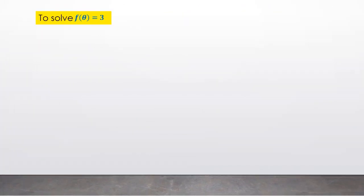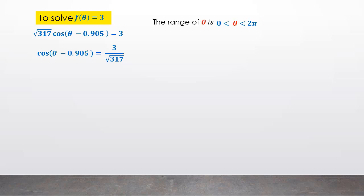To solve f(θ) = 3, we substitute to get √317 cos(θ - 0.905) = 3. We rearrange to get cos(θ - 0.905) = 3/√317. Since the given range is 0 < θ < 2π, the range of θ - 0.905 is -0.905 < θ - 0.905 < 5.378.